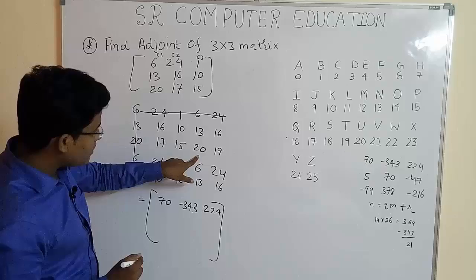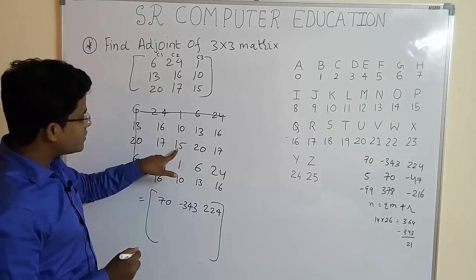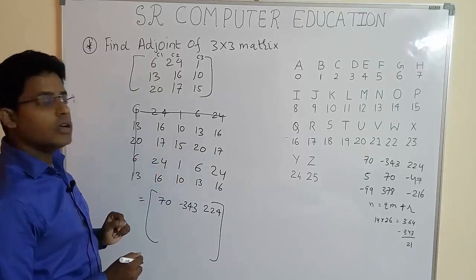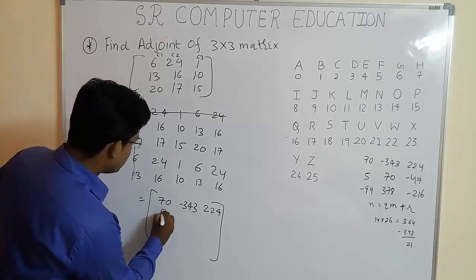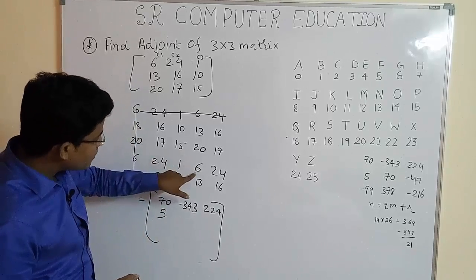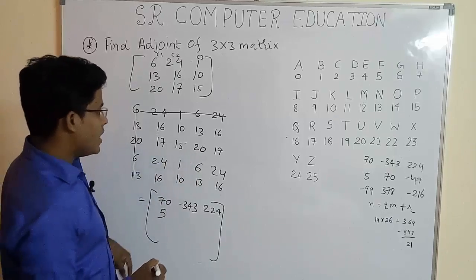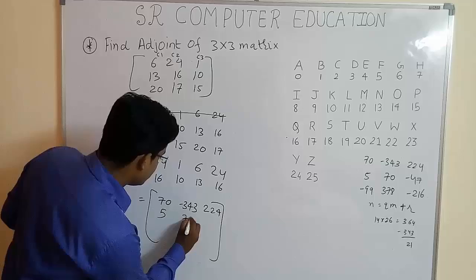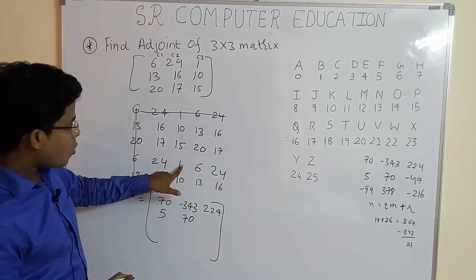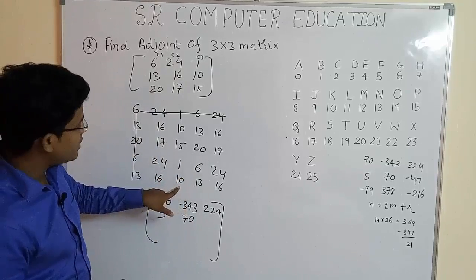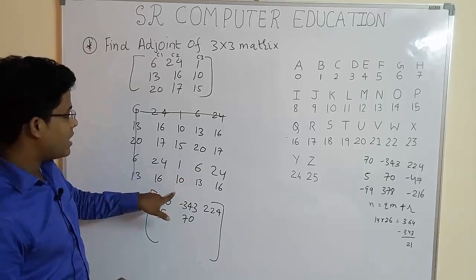10 multiply by 20 minus 15 multiply by 13. You will get 5. Next, 15 multiply by 6 minus 1 multiply by 20. You will get 17. And 1 multiply by 13 minus 6 multiply by 10. You will get minus 47.